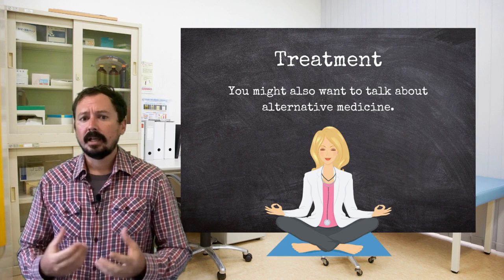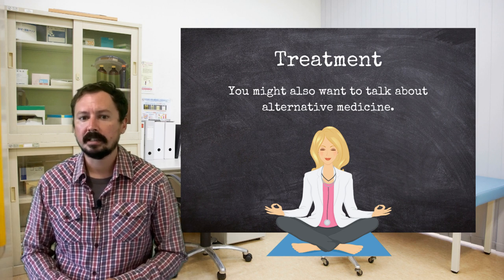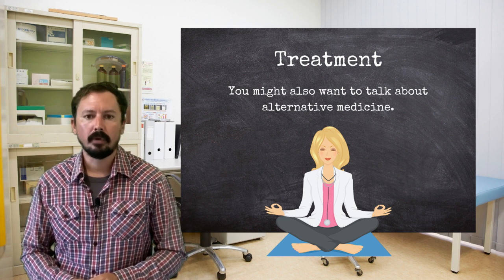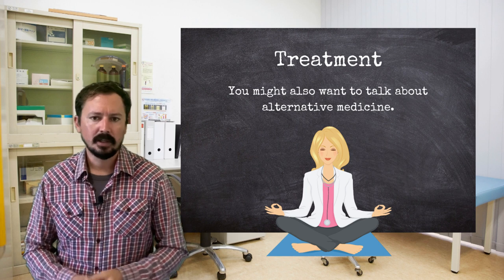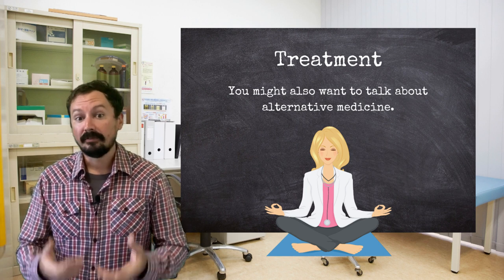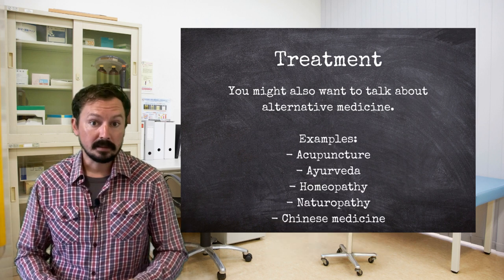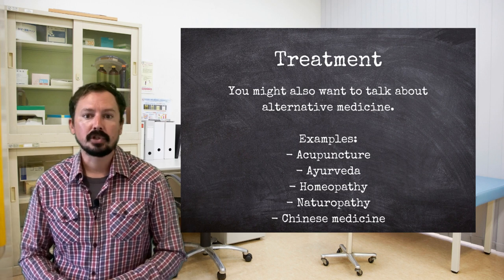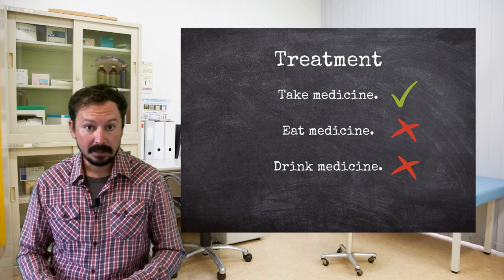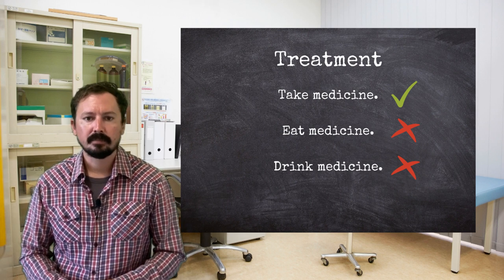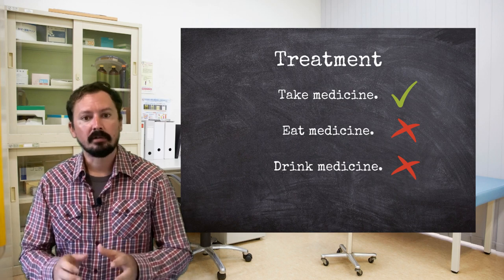Very occasionally, you might encounter the topic of alternative medicine. Again, this could theoretically appear in any of the four parts of the test, so be aware of the basic vocabulary for this. We typically use 'alternative medicine' for that which is not really a part of conventional medicine — in other words, it has not been proven effective by the scientific method. This might include traditional medicines, folk medicines, and practices like homeopathy and acupuncture. Finally, when we talk about medicine in English, we usually say 'take medicine' or 'take painkillers'. In other languages people say 'eat' or 'drink' medicine, but this is not correct in English.